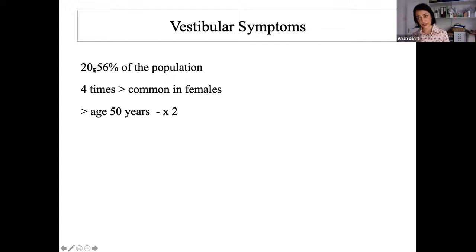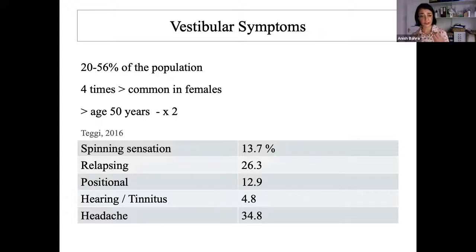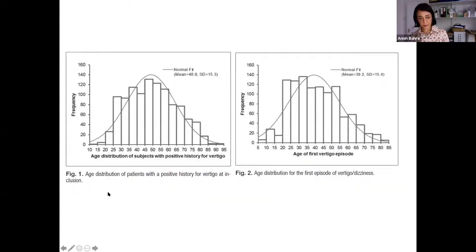Vestibular symptoms occur in almost half the migraine population in some studies. Many people say they've had labyrinthitis — the question is whether all labyrinthitis is part of this aura phenomenon. It's more common in females and in those over 50. About 10–15% get true spinning, a quarter have it coming and going, 10% have it with positional change, 5% have impaired hearing or tinnitus. Crucially, 35% of this group have headache, versus a background population rate of 12% — a significant association.